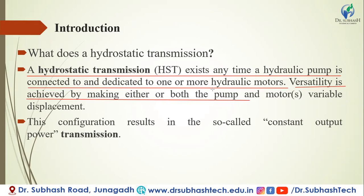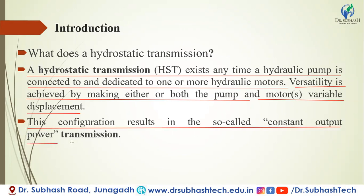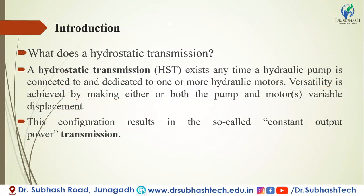Versatility is achieved by making either or both the pump and motor variable displacement. Sometimes you require variable speed — slow, medium, or higher speed — so the motor and pump are made as variable displacement, allowing us to achieve a number of speed stages. This results in what is called constant output power transmission, giving continuous rotational output rather than intermittent drive.